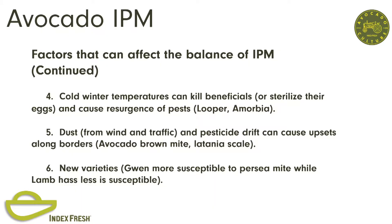Cold winter temperatures can kill parasites that are regulating populations of Amorbia and looper, or they can cause the parasites—trichogramma specifically—to lay sterile eggs for a while, so you don't get control and the pest gets out of control. Dust, pesticide drift, and new varieties can upset IPM. Gwynns drop their leaves quicker than any variety—they're the most susceptible to perseamite of all the varieties. Whereas Lambhas is one of the more resistant ones. I've never treated Lambhas for perseamite.